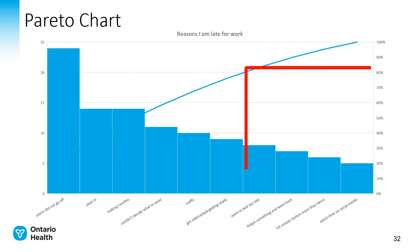You can choose the Pareto chart function under Insert > Charts > Histogram > Pareto in Excel and Excel will do the work for you. Once you highlight that data in the Excel spreadsheet, this is the Pareto chart that will be created.